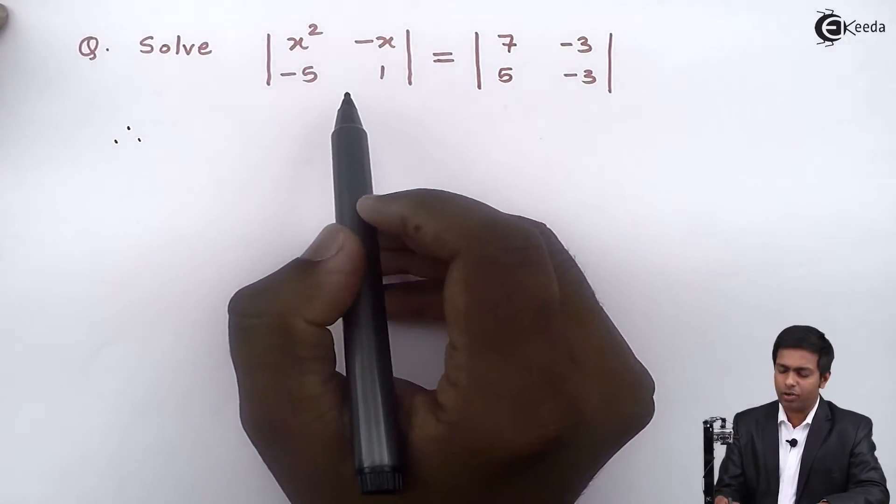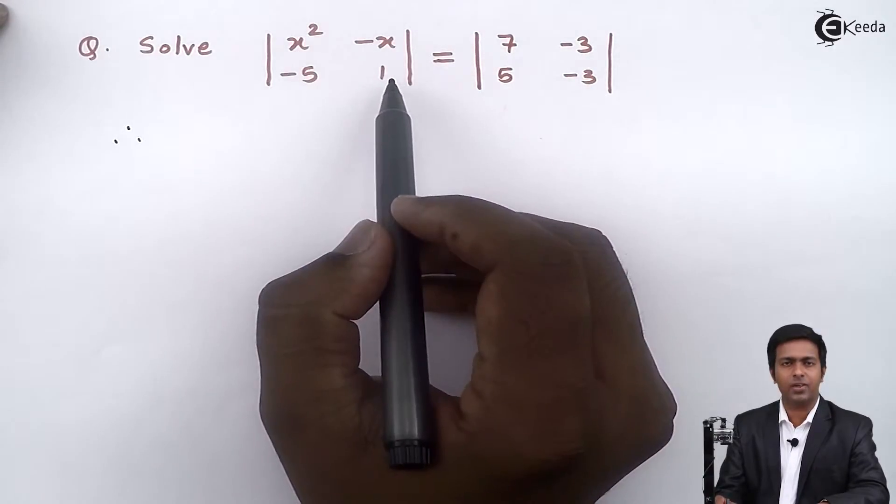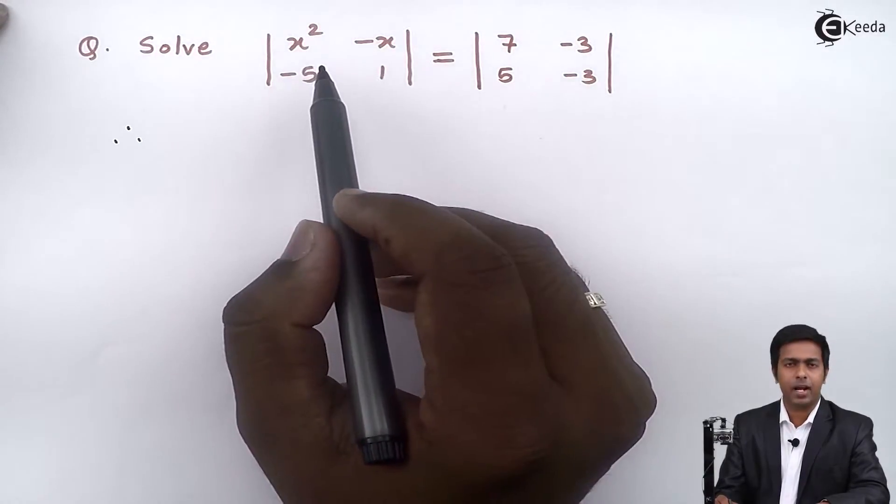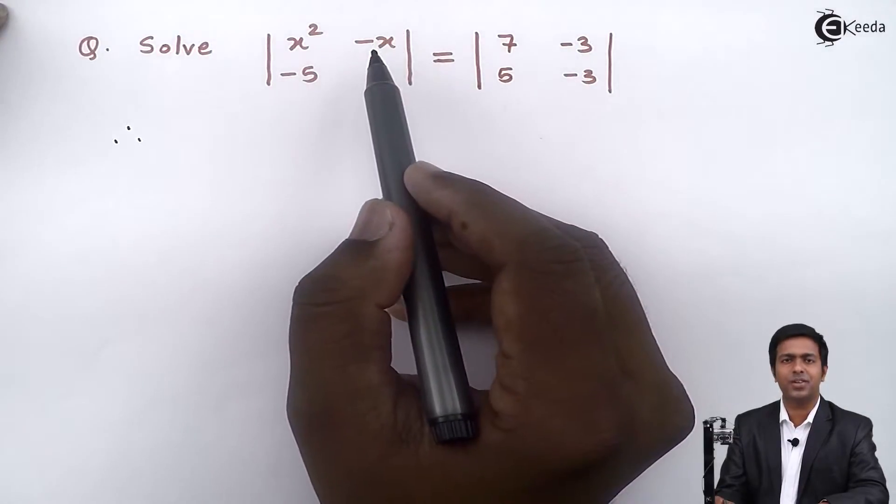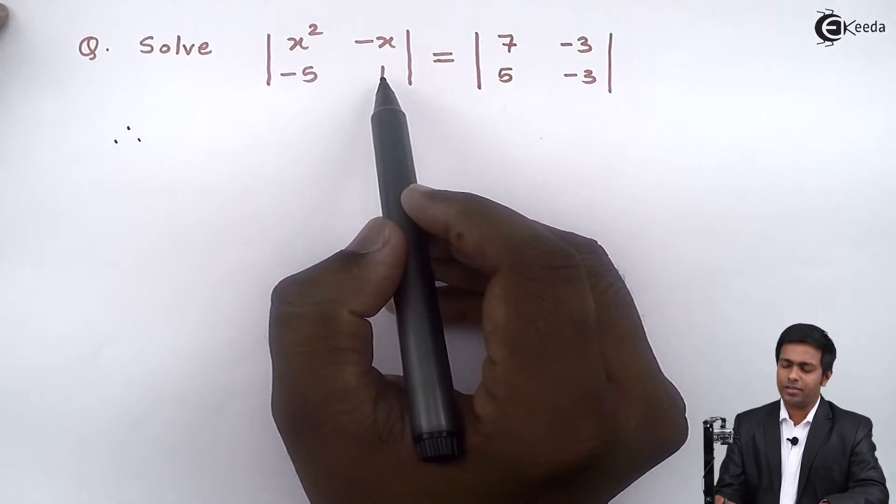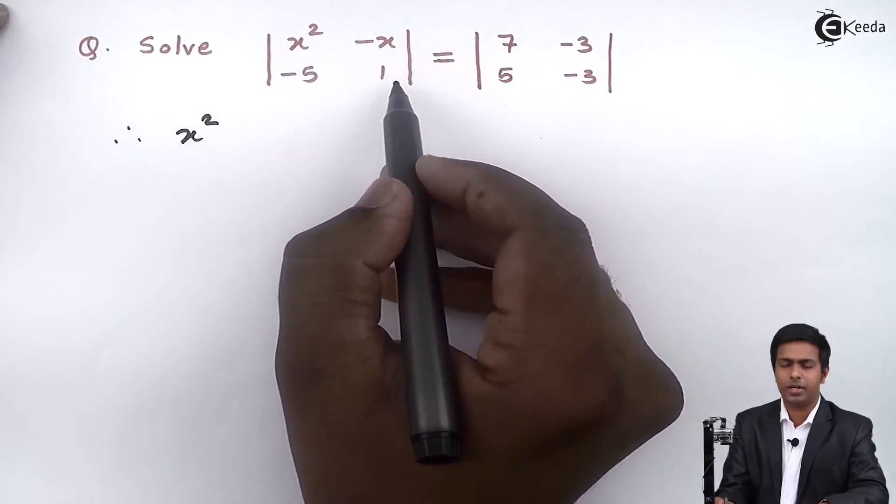So to solve the determinant of 2 by 2 order, we multiply the elements on the principal diagonal and then we subtract the multiplication of the elements which are on the secondary diagonal. So here x square into 1 that will become x square, so these 2 elements are on the principal diagonal.